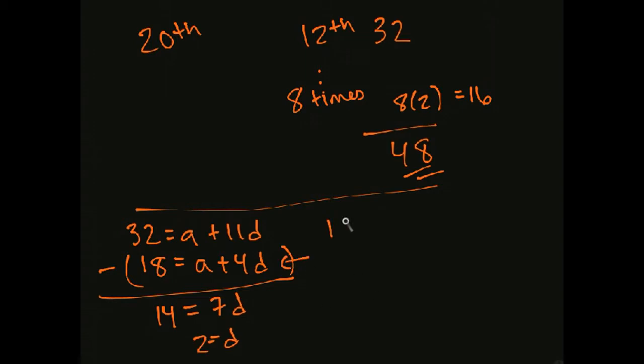And then I'll plug that back into this equation. 18 is equal to a plus 4 times 2. So a must be 10. Now, to get the 20th term, we take a plus n minus 1, so that's 19 times 2. So that's 10 plus 38, so we get 48.